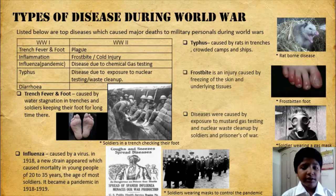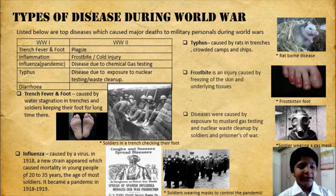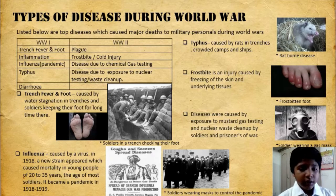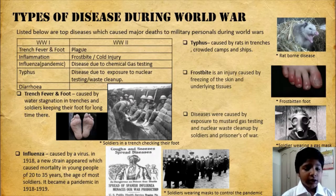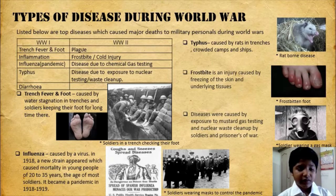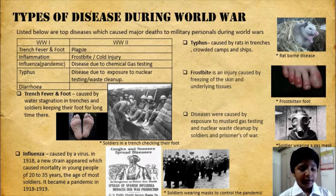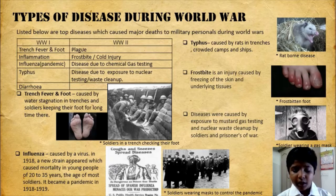Types of disease during World War I include trench fever, foot inflammation, influenza, typhus and diarrhea. In World War II, top diseases are plague, frostbite, diseases due to chemical gas testing, and disease due to exposure to nuclear testing and waste cleanup. Trench fever and foot conditions were caused by water stagnation in trenches. Influenza is caused by a virus; in 1918 a new strain appeared causing high mortality in young people aged 20 to 35, becoming a pandemic. Typhus was caused by rats in trenches, crowded camps and ships. Frostbite is an injury caused by freezing of the skin and underlying tissues. Diseases were also caused by exposure to mustard gas testing and nuclear waste cleanup by soldiers and prisoners of war.